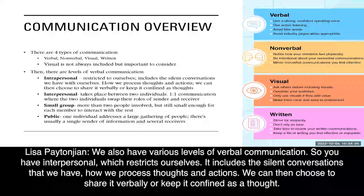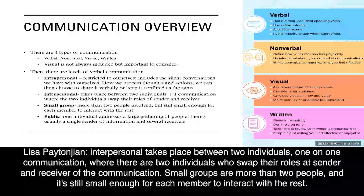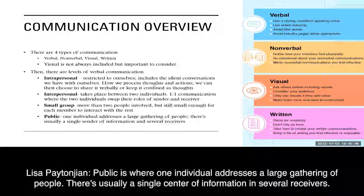We also have various levels of verbal communication. We have intrapersonal, which restricts ourselves and includes the silent conversations that we have — how we process thoughts and actions. We can then choose to share it verbally or keep it confined as a thought. Interpersonal takes place between two individuals, one-on-one communication where two individuals swap their roles of sender and receiver. Small groups are more than two people, still small enough for each member to interact with the rest. Public is where one individual addresses a large gathering of people, with usually a single sender and several receivers.